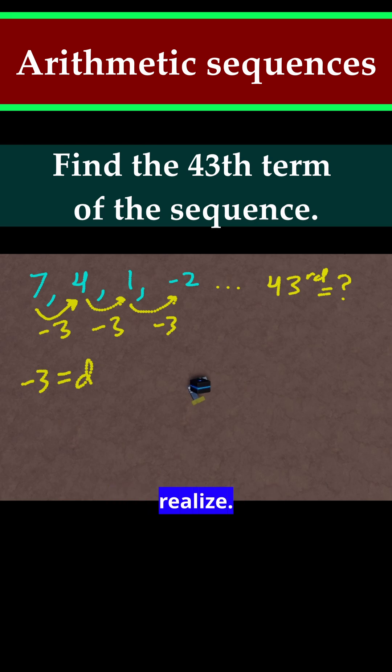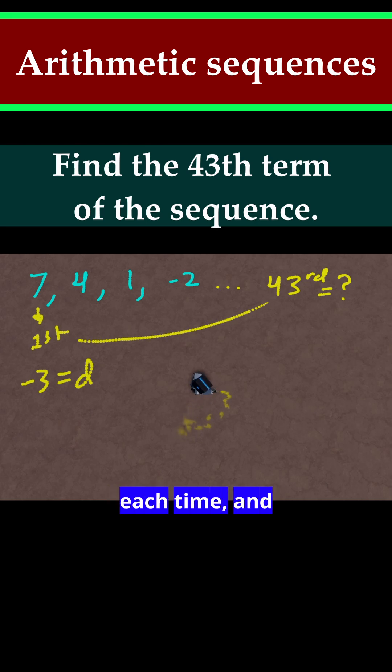And now here's the next thing that you want to realize. So 7 is our first term, right? So I'm going to say this is our first term. And you want to go to the 43rd term. So if we're going by minus 3 each time and we're going from the first to the 43rd term, how many times are we doing minus 3? Well, all you need to do is 43 minus 1 equals 42.